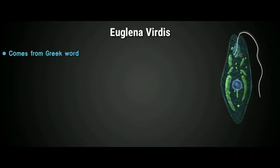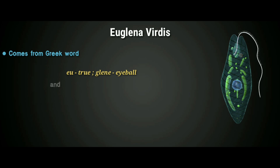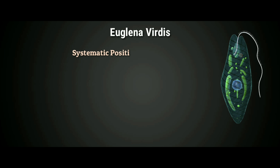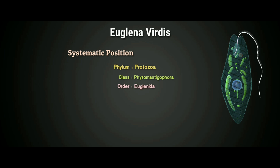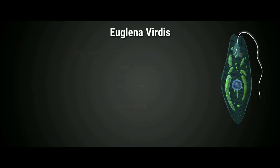The word Euglena viridis comes from the Greek word: 'Eu' which means true, 'Glene' which means eyeball, and 'viridis' which means green. Its systematic classification is: phylum Protozoa, class Phytomastigophora, order Euglenida, genus Euglena, species viridis.